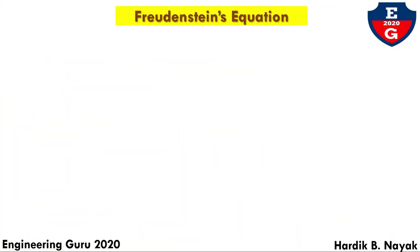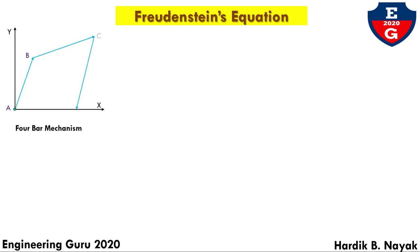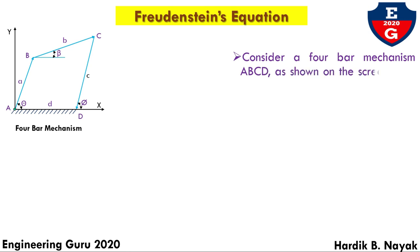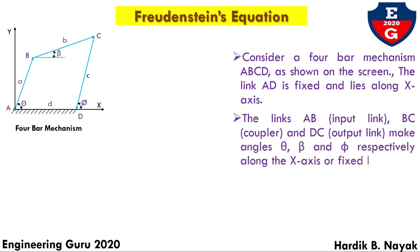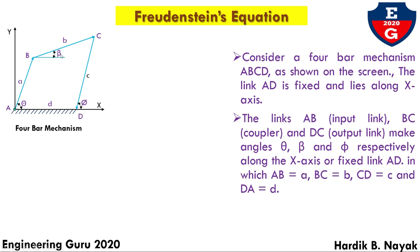Consider a 4-bar chain mechanism ABCD as shown on the screen. The link AD is fixed and lies along the X-axis. Link AB is called the input link. Link BC is called the coupler link and link DC is called the output link. The input link makes angle theta, the coupler link makes angle beta, and the output link makes angle phi. Here, small a represents the length of the input link, small b the coupler link, small c the output link, and small d the fixed link.